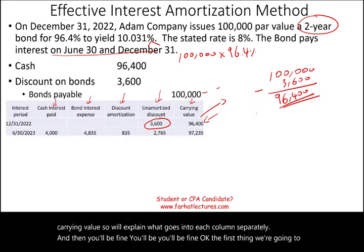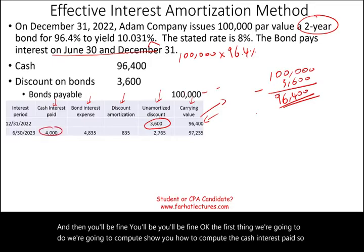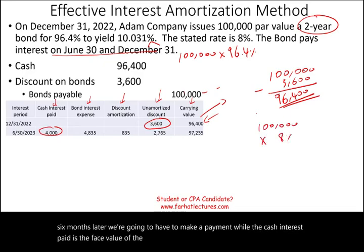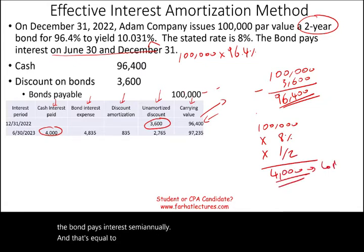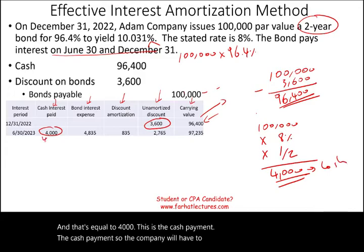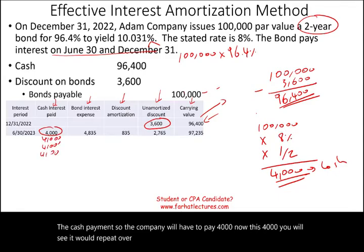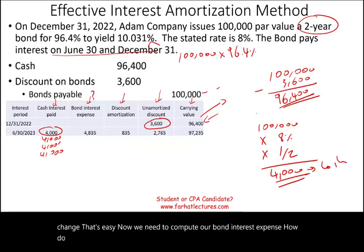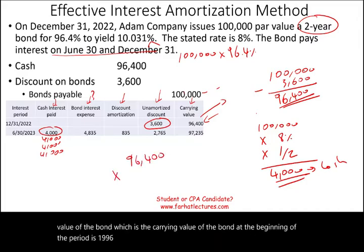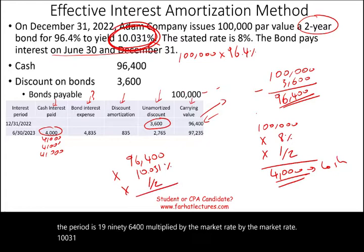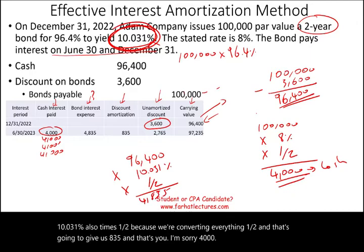The first thing we compute is the cash interest paid. Six months later, we make a payment. Cash interest paid equals the face value of the bond times the stated rate times one-half, because the bond pays interest semi-annually — that equals $4,000. This cash payment repeats over all four periods and never changes. For bond interest expense, we take the carrying value at the beginning of the period, $96,400, multiplied by the market rate of 10.031%, also times one-half — giving us $4,835.